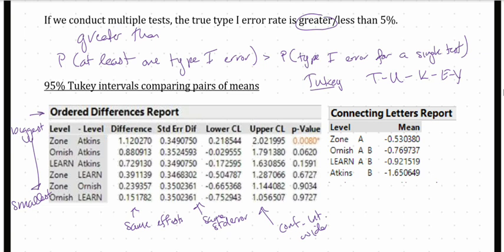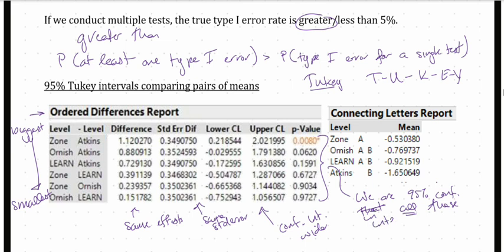The total type 1 error rate for all six intervals is no more than 5%. When we look at all six of these intervals together, we are 95% confident that all of them contain the true differences. It is not any one of them individually. With Fisher, each interval had 95% confidence; with Tukey, the entire set of intervals has 95% confidence.